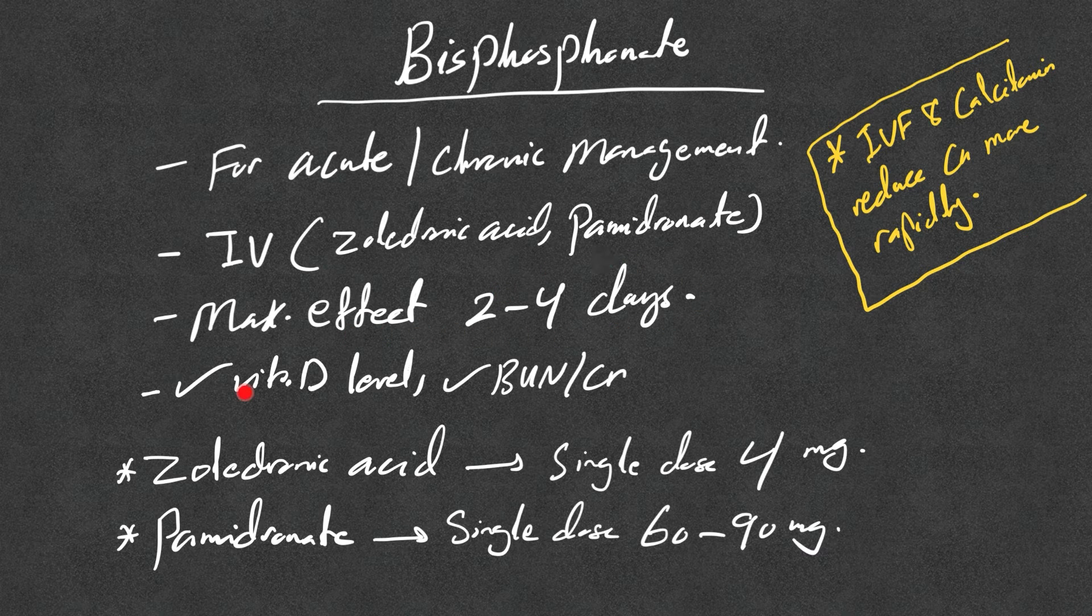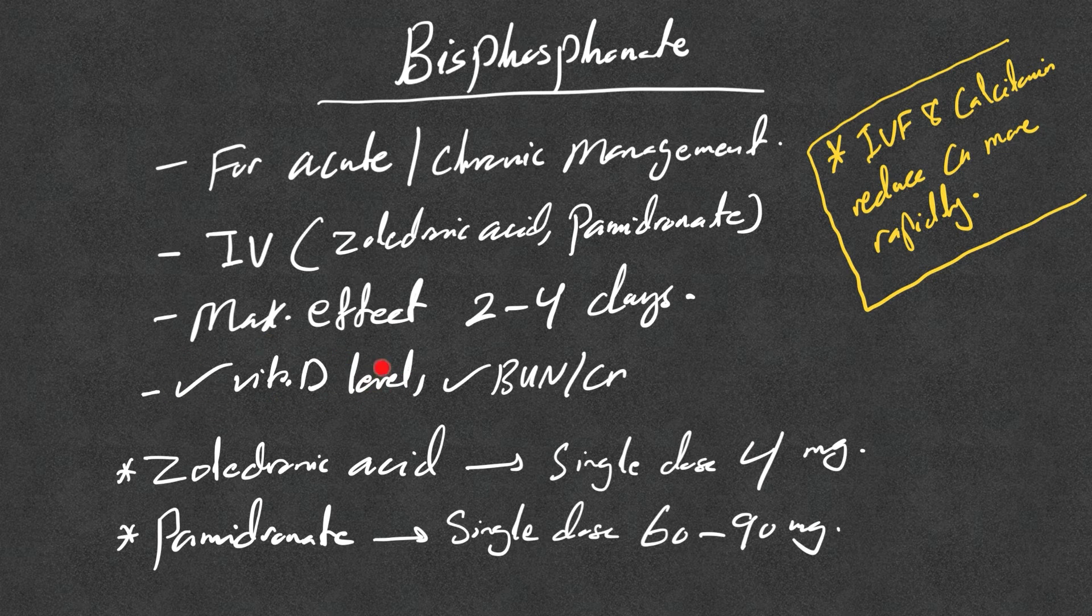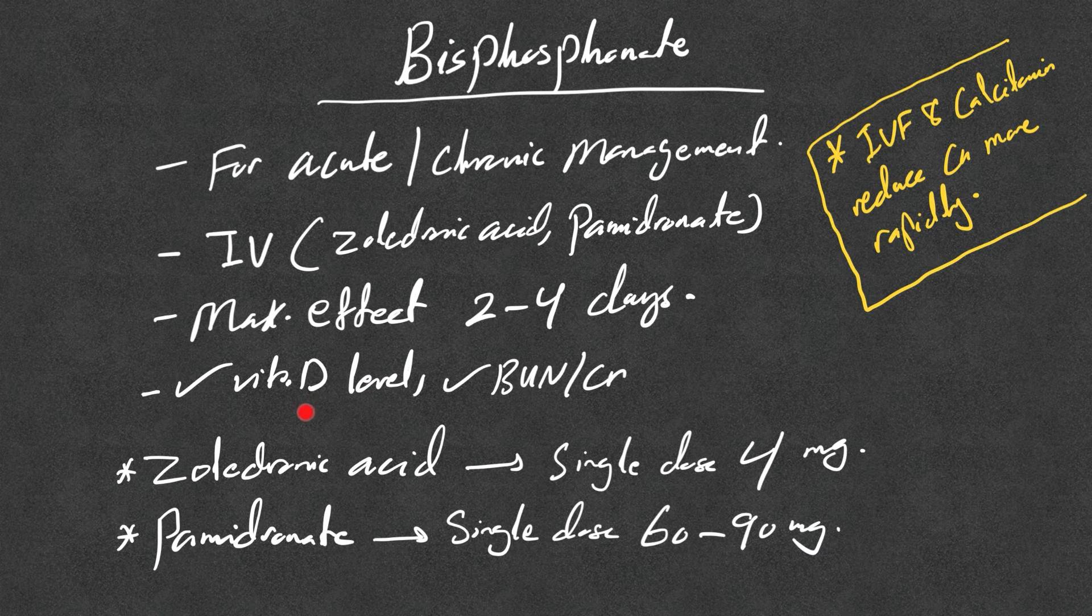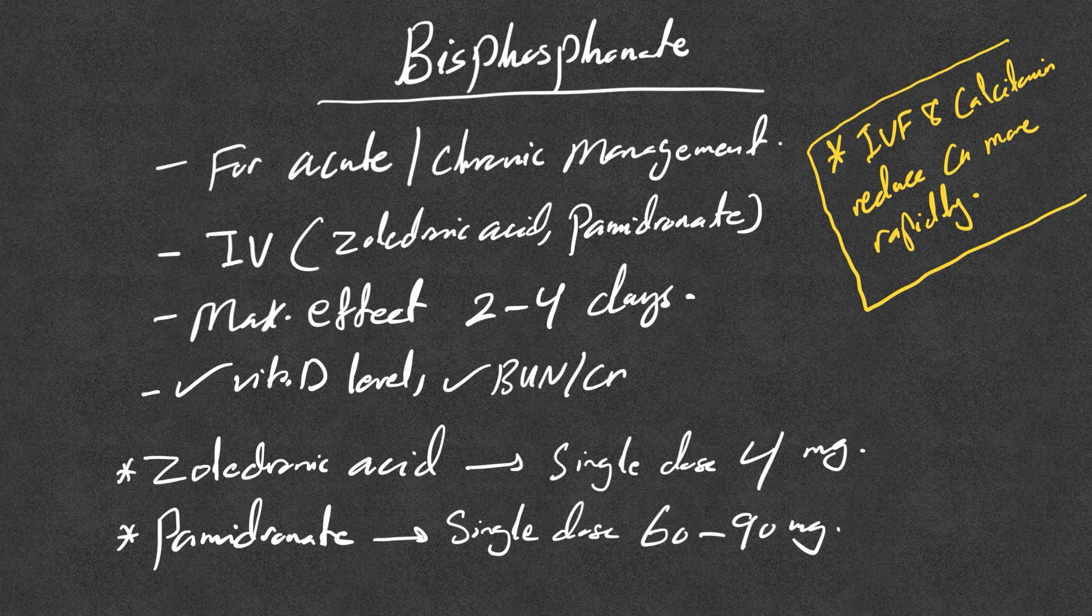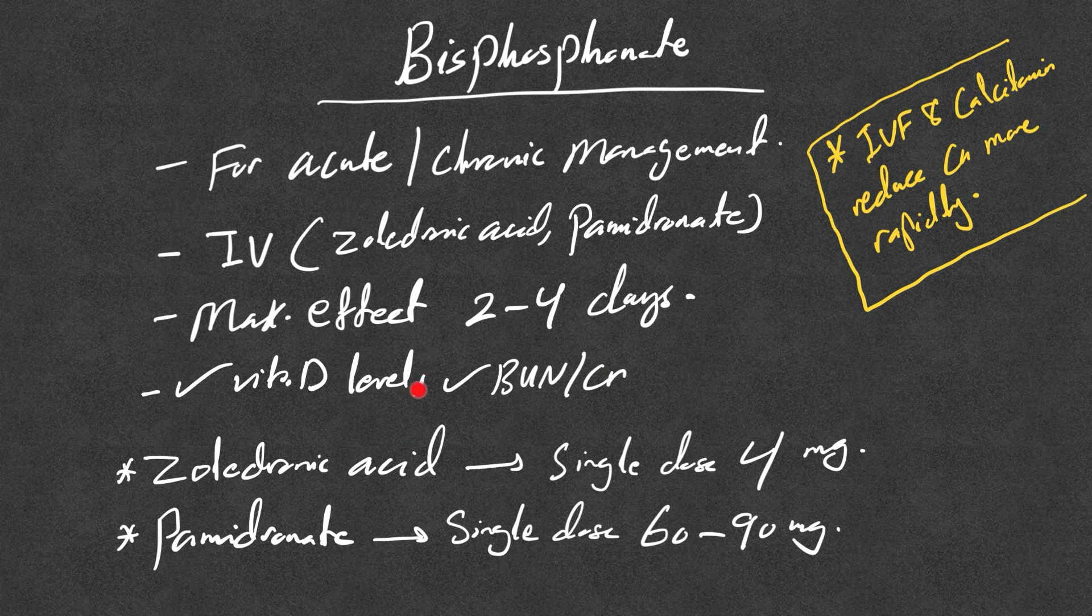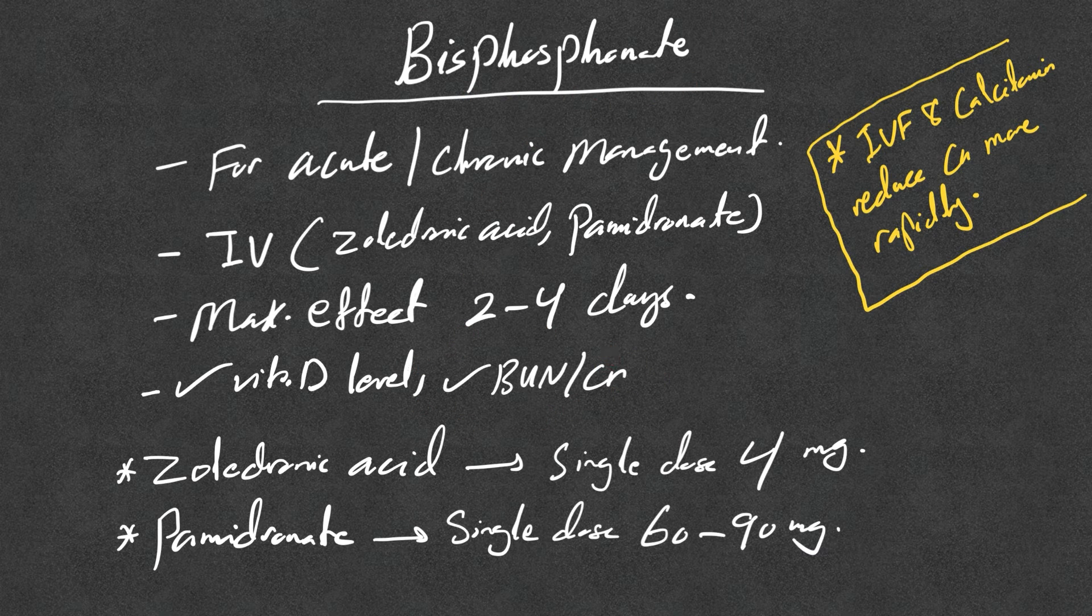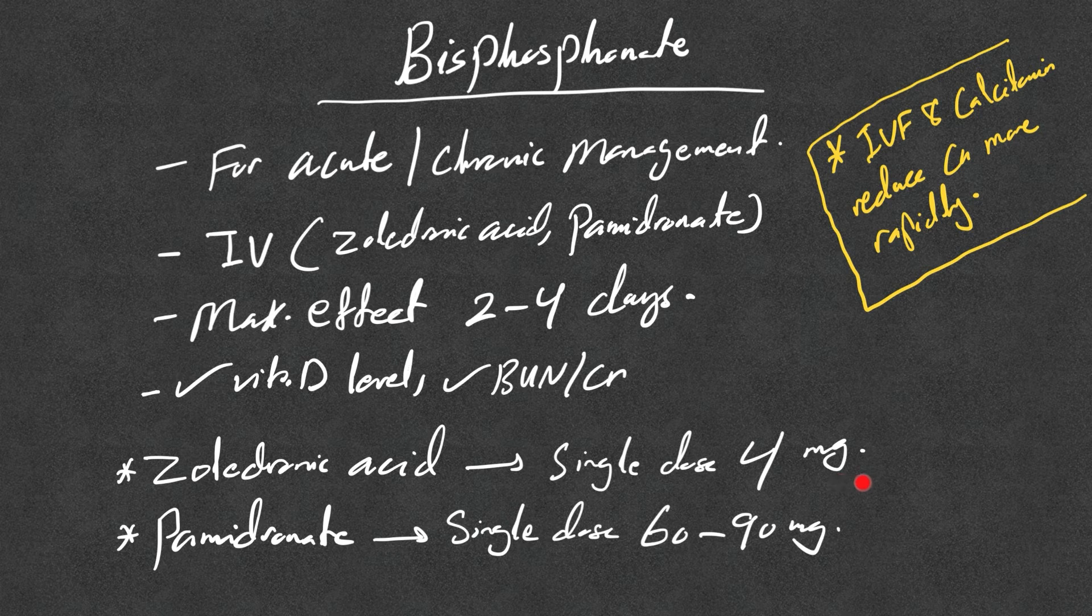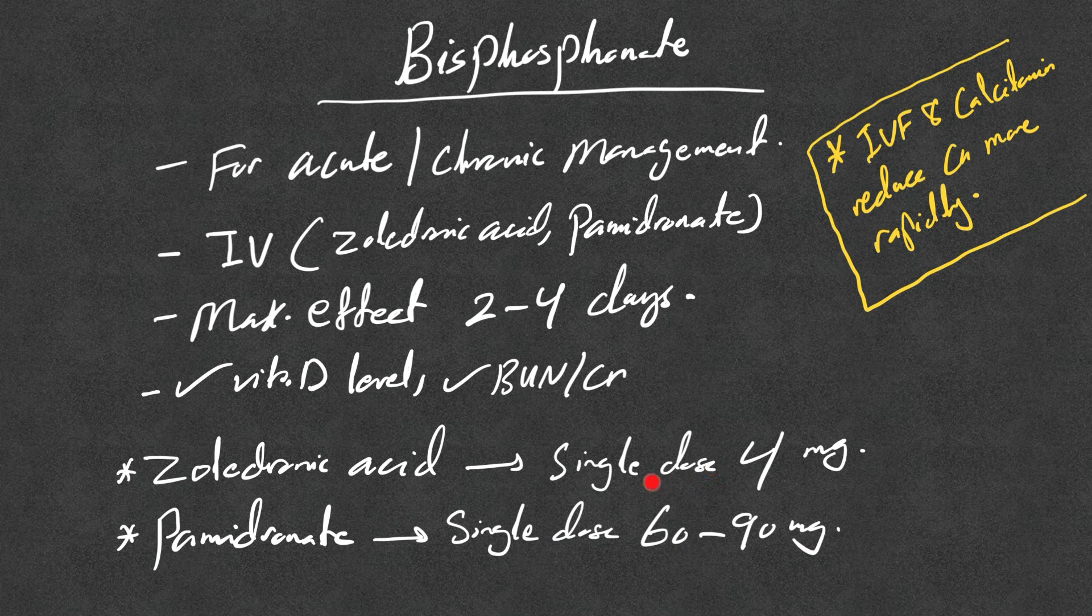We check vitamin D level because these patients, if they are vitamin D deficient, they develop prominent hypocalcemia after the treatment with bisphosphonate. And we check kidney function because bisphosphonates are contraindicated in advanced kidney impairment. Zoledronic acid: we give single dose four milligrams IV, and pamidronate single dose 60 to 90 milligrams as well IV.